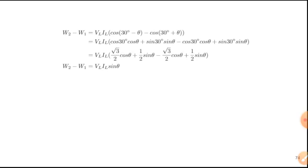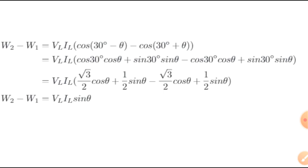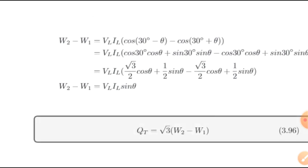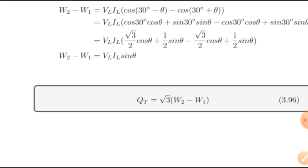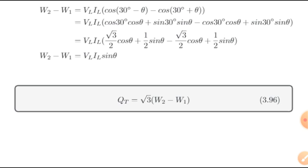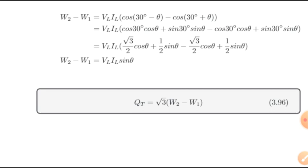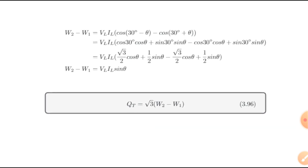Interestingly, if we subtract W2 − W1 and apply the identity again, we get V_L × I_L × sin(θ). Multiplying by √3 gives Q_total = √3 × V_L × I_L × sin(θ), which is the total reactive power. So using the 2-wattmeter method, we can measure both total real power (W1 + W2) and total reactive power (√3 × (W2 − W1)). This is a very advantageous method, mostly used in industries, transmission lines, and distribution systems.